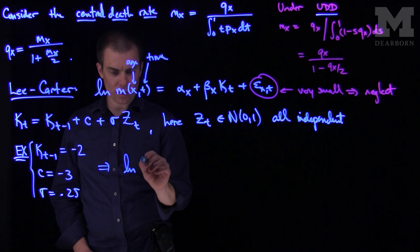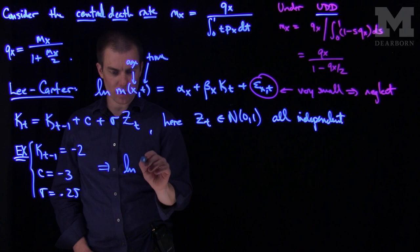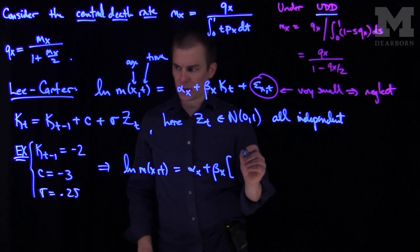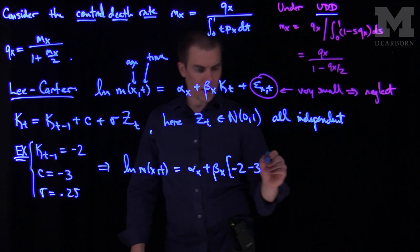In this example for Lee-Carter, what we would have is the natural log of mx of t would be equal to alpha x, if that was given to us, and then beta x times the expression negative 2 and then minus 3 and then plus 0.25 zt.